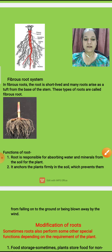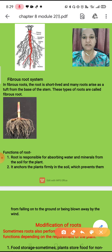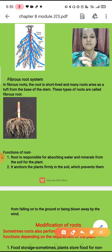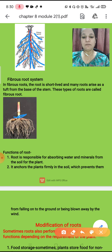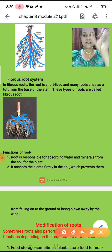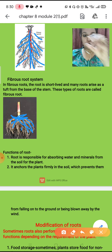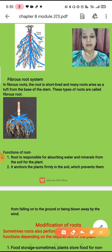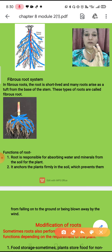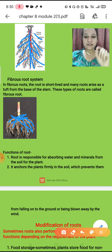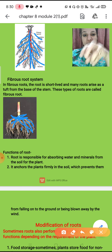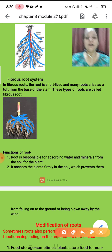Now second comes the fibrous root system. Hear the difference: in tap root system you can see one root is growing first and the rest are arising from this primary root. But in fibrous root system, you will see at the bottom of the stem a tuft or cluster of roots — ek pura bunch hota hai roots ka. Here the roots arise directly from the base of the stem in a cluster. The roots in fibrous root system are short-lived and arise tough from the base of the stem. This root system is called fibrous root system.